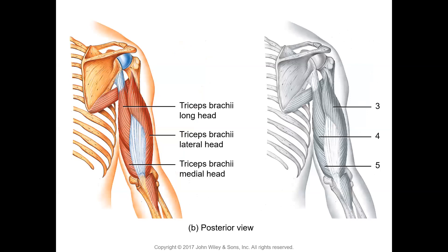The posterior view shows the extensor muscles — the triceps brachii. 'Triceps' means three heads: the long head, the lateral head, and the medial head. Number three is the triceps brachii lateral head, number four is the long head, and number five is the medial head. All three heads extend the forearm and extend the arm, since the fibers cross both the shoulder and elbow joints.